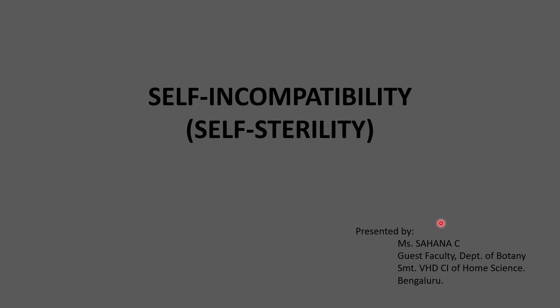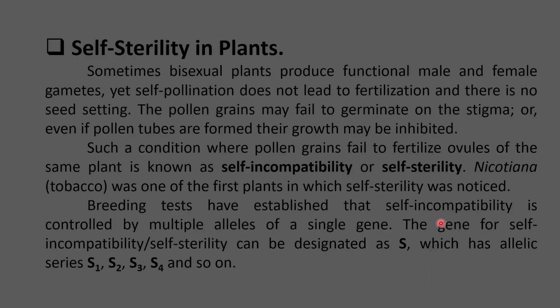Hello all, this is Sahana here with the topic self-incompatibility or self-sterility. Self-incompatibility systems are genetic systems evolved by flowering plants to increase the genetic diversity of their offsprings. These systems are fundamentally based on a mechanism to differentiate self-pollinating pollens from cross-pollinating pollens, followed by a mechanism to reject the self-pollinating pollen. As a result, the system prevents self-fertilization and promotes out-crossing or cross-breeding, increasing genetic diversity of the offsprings.